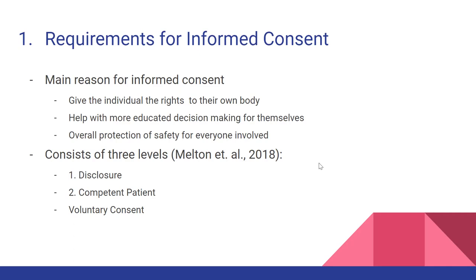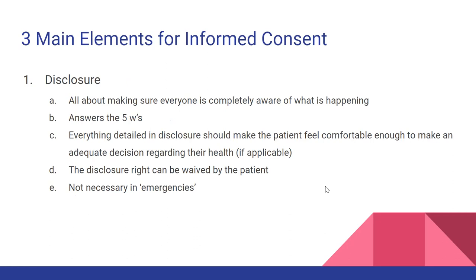Informed consent consists of three elements, as we learned from our textbook: disclosure, being a competent patient, and voluntary consent. The first element is disclosure — making sure everyone is completely aware of what is happening. This answers the five W's: who, what, when, where, and why. Everything is detailed in disclosure.